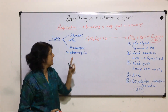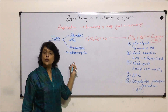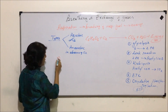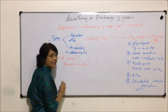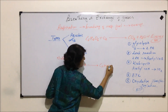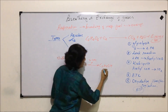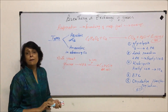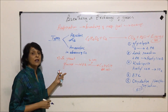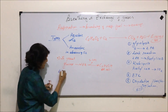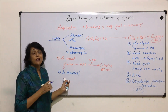We have covered aerobic respiration briefly. Now, anaerobic respiration: in lower organisms like yeast, glucose is broken down into ethyl alcohol. What happens is glucose is broken down into pyruvic acid, and pyruvic acid is converted into two molecules of ethanol, with carbon dioxide also given off. This is what happens in yeast.